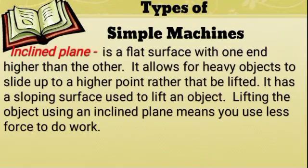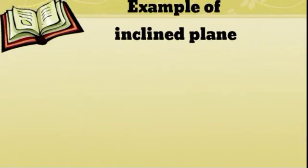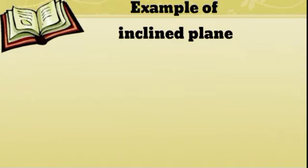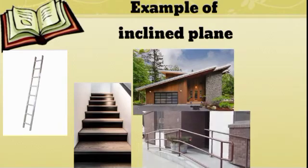What is an inclined plane? It is a flat surface with one end higher than the other. It allows heavy objects to slide up to a higher point rather than be lifted. It has a sloping surface used to lift an object. Lifting the object using an inclined plane means you use less force to do work. Some examples of inclined plane are ladder, stairs, slanted roof, ramp, and slide.